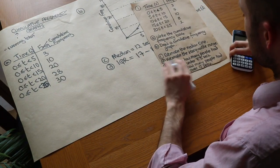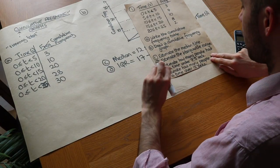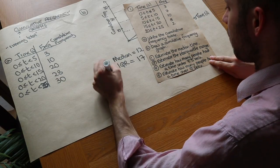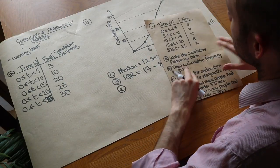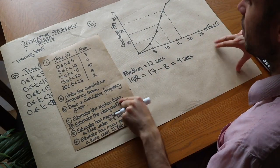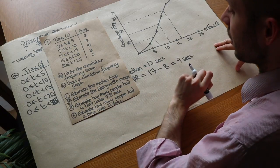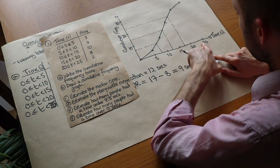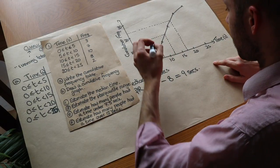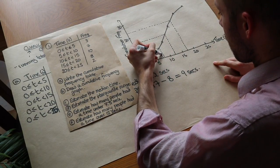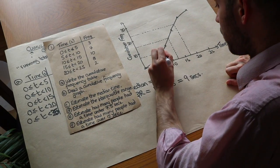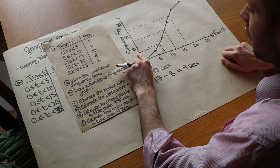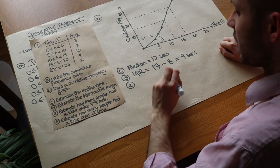Next, estimate how many people had a time under 7.5 seconds. Instead of going across the cumulative frequency axis, we go across the time axis at 7.5 seconds, go up to the graph, and then across. It's actually quite similar to the lower quartile reading. We estimate that's roughly six people, so the answer is six people had a time of up to 7.5 seconds.